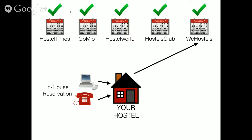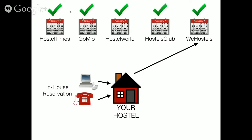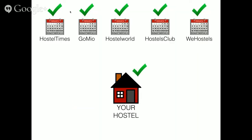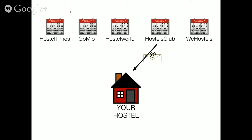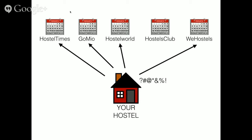So now you have to communicate the fact that you received a reservation to all of those different sites. You can log into each one of those sites one at a time and give them all the information, but that takes a lot of time. And then all of a sudden you get a reservation from, say, Hostels Club — well, none of the other sites know about that reservation. So now you've got to log into Hostel Times, GoMeo, Hostel World, and We Hostels, and things start to get very frustrating.